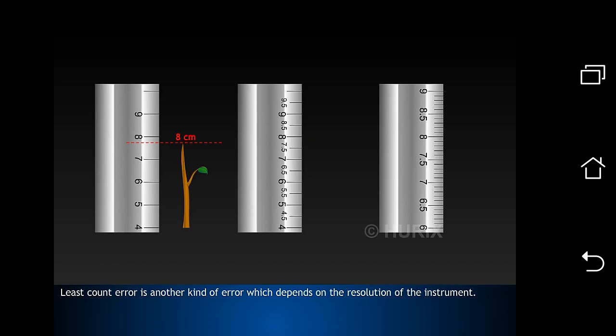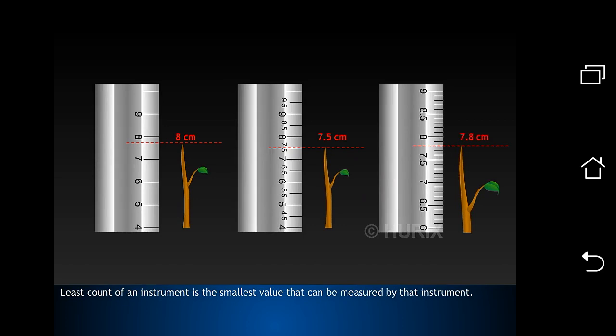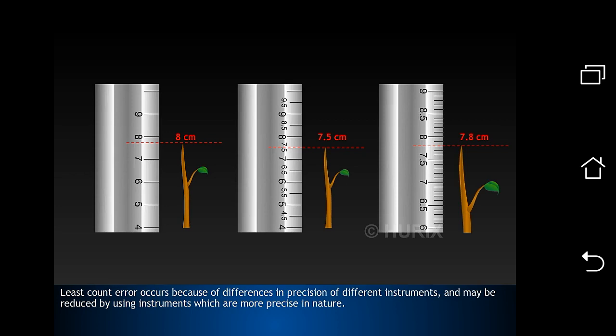Least count error is another kind of error which depends on the resolution of the instrument. Least count of an instrument is the smallest value that can be measured by that instrument. Least count error occurs because of differences in precision of different instruments and may be reduced by using instruments which are more precise in nature.